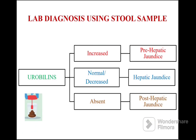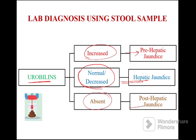Lab diagnosis using stool sample — testing urobilinogen in stool. If urobilinogen is increased, that indicates pre-hepatic jaundice. If urobilinogen is normal or decreased, that indicates hepatic jaundice. If urobilinogen is absent, that indicates post-hepatic or obstructive jaundice.